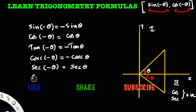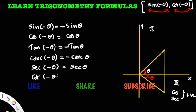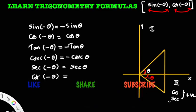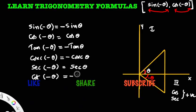Last one: cot of minus theta. What is cot of minus theta? Minus theta lies in the fourth quadrant. In the fourth quadrant, cot is negative. That's why cot of minus theta is minus cot theta.